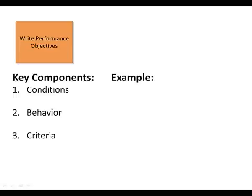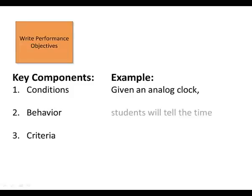Let's look at an example of how these key components play out. So for the conditions, given an analog clock, those are the resources that the learner has available. Students will tell the time, that's the behavior, to the nearest minute. This is a simple example of a performance objective.